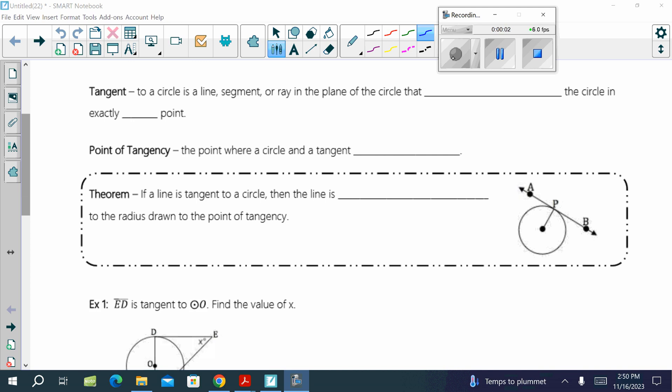The last thing we have to talk about with a circle is a tangent line. So we talked about this on the first day. We defined it - a tangent to a circle, a line, segment, or ray in the plane of the circle that intersects the circle in exactly one point.